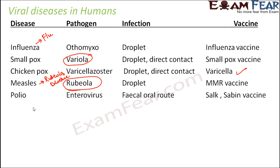Polio, also called poliomyelitis, affects the skeletal muscles of the person, causing paralysis so the person cannot walk normally. It is caused by enterovirus and the infection spreads through the fecal-oral route — the infection is present in feces and transmitted through contaminated food or contact. The vaccines available for polio are the Salk vaccine and the Sabin vaccine.